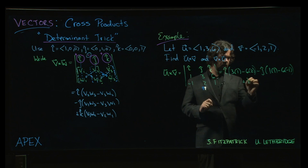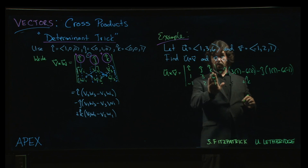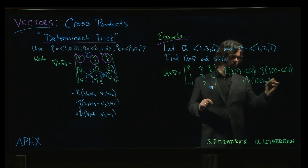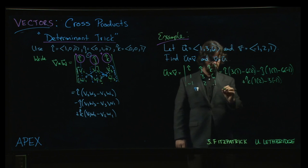And then finally, for k, we cover up the numbers under the k. We do this 2 by 2 here. 1 times 2, subtract 3 times minus 1.